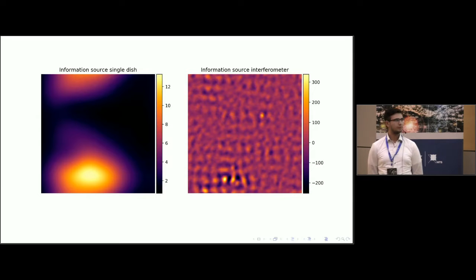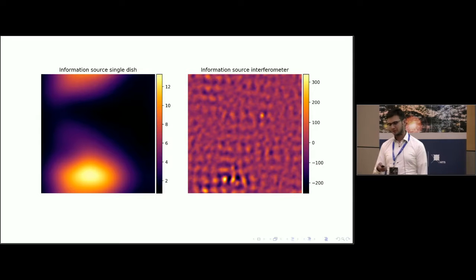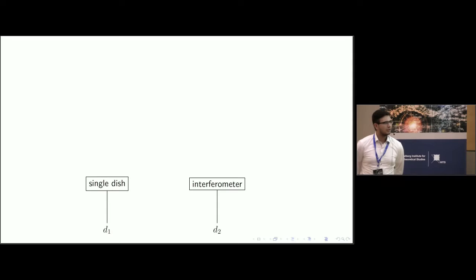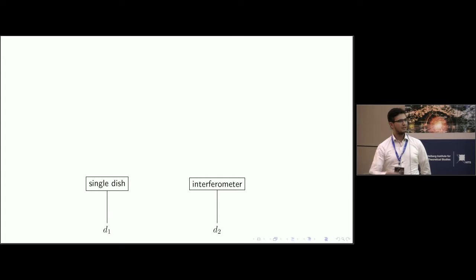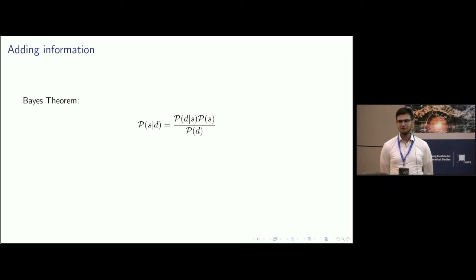And now the task what we want to do is we want to combine these different things into one reconstruction because the single dish is very smeared out and you don't have any small scale structures where it's the other way around for the interferometer. So how do we do this? Well, as I said, they are looking at the same thing into the sky and they provide us with different data from exactly that place. So what connects them is the physical reality which we're both looking at. And how do we combine this data? Well, we ask Bayes how to do this.